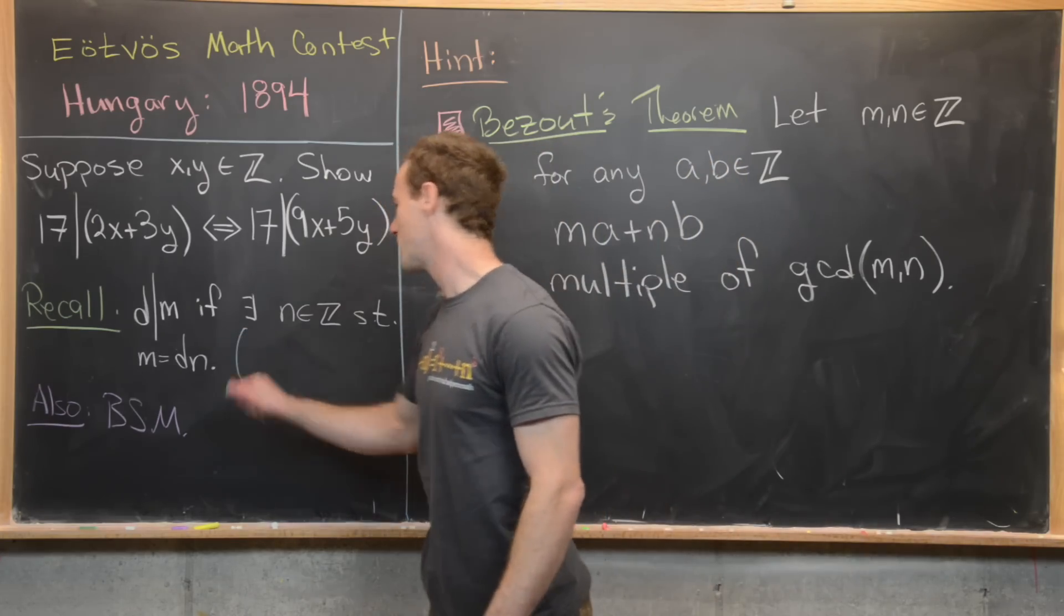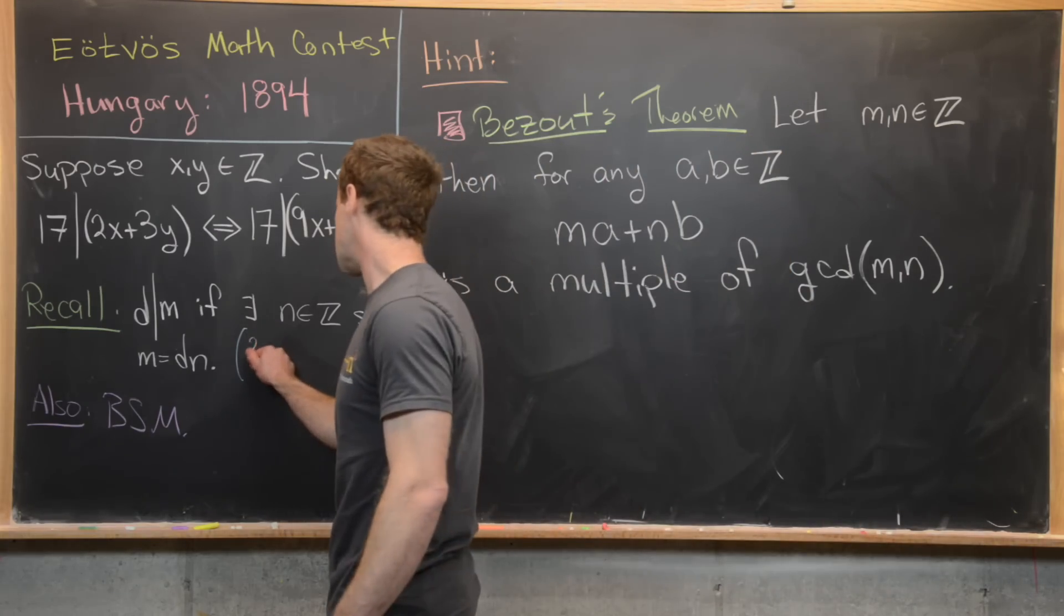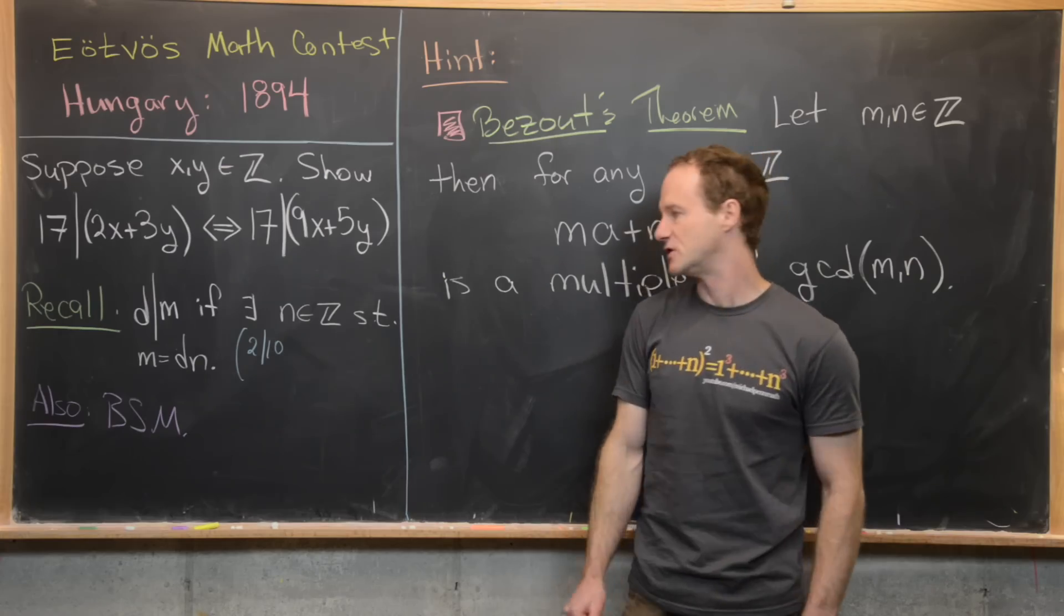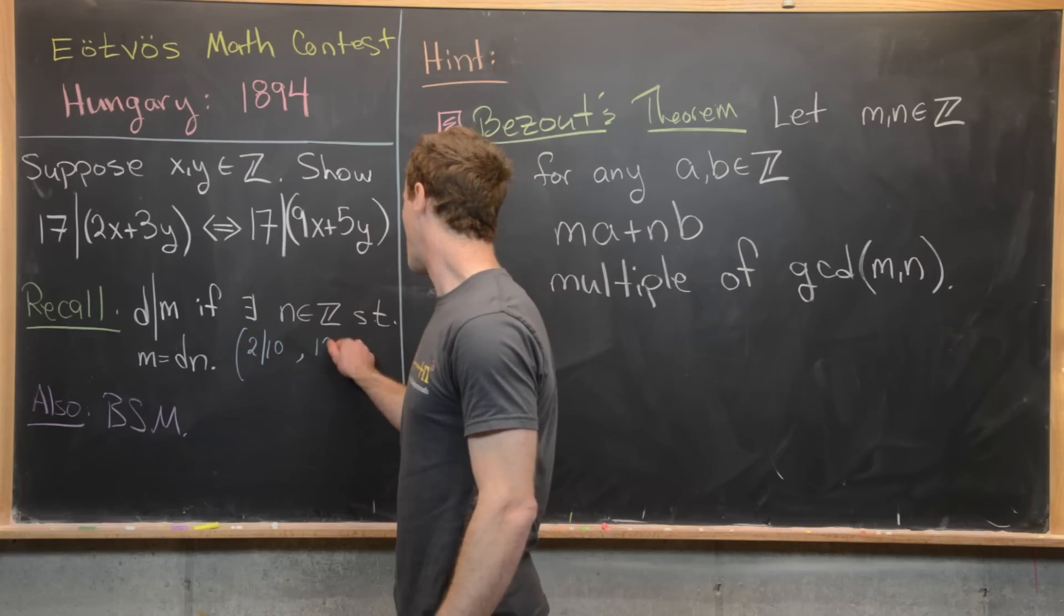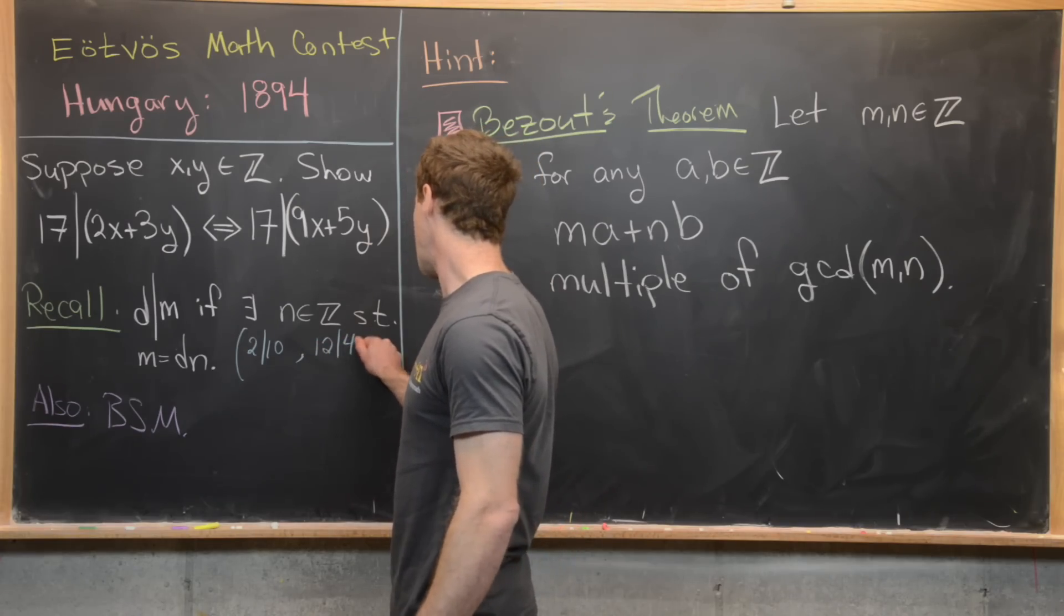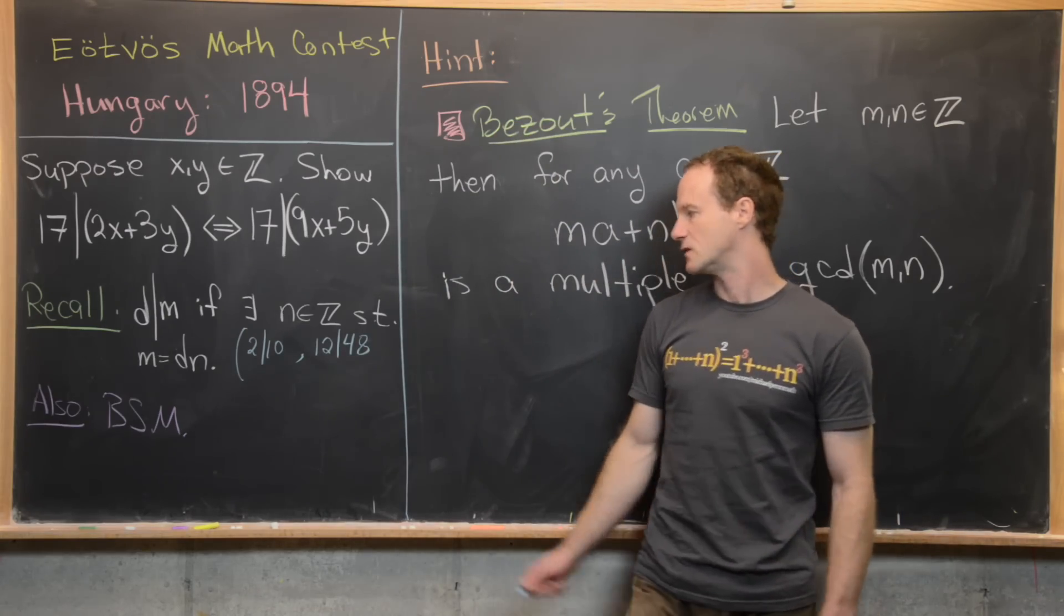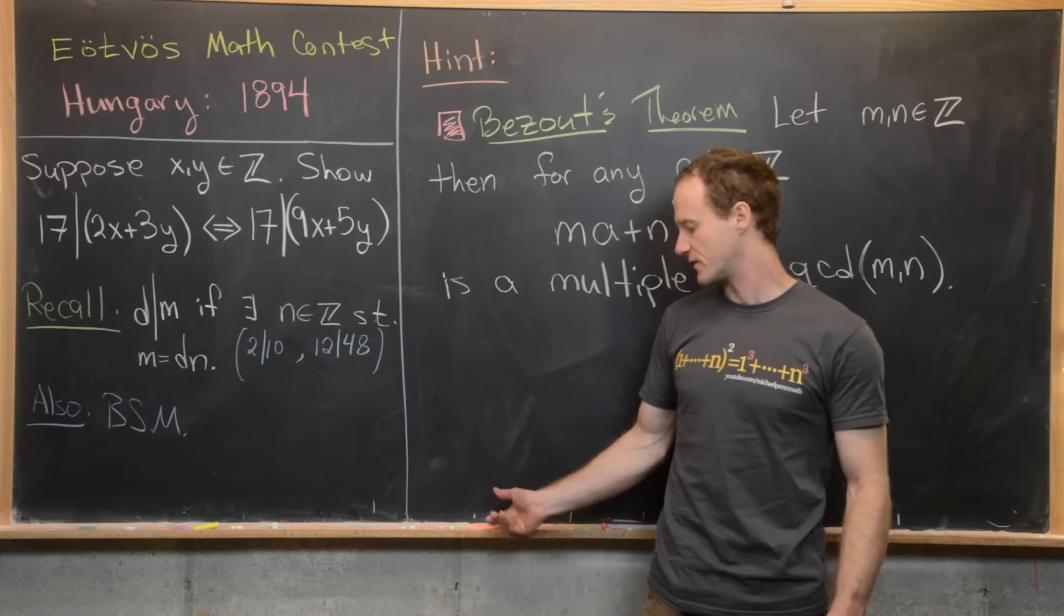So let's maybe do a couple of examples just so that we know what's going on. So notice that 2 divides 10, because 10 is a multiple of 2, 10 equals 2 times 5. And then maybe 12 divides 48, because 48 is a multiple of 12. 48 is equal to 4 times 12. Now you guys can cook up a bunch more examples if you're interested.